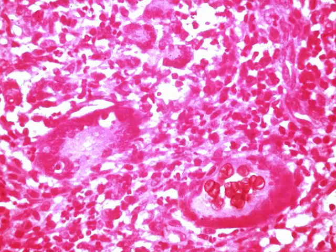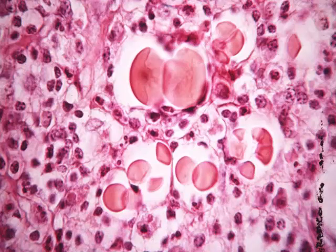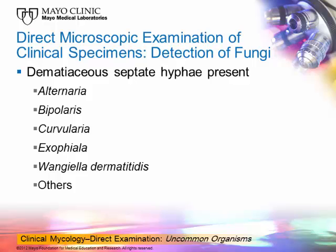The next slide shows you a biopsy. At about 4 or 5 o'clock, you can see a very large cell that contains muriform bodies or copper pennies inside it. You need to look at the whole slide before you make a decision. The following biopsy slide shows the copper pennies very readily — this is an H&E stain. Some cells are larger than others, and some are round, hence the term 'copper pennies.' At about 1 o'clock, you can see the fission plane down the middle between two cells. These are the muriform bodies of chromoblastomycosis.